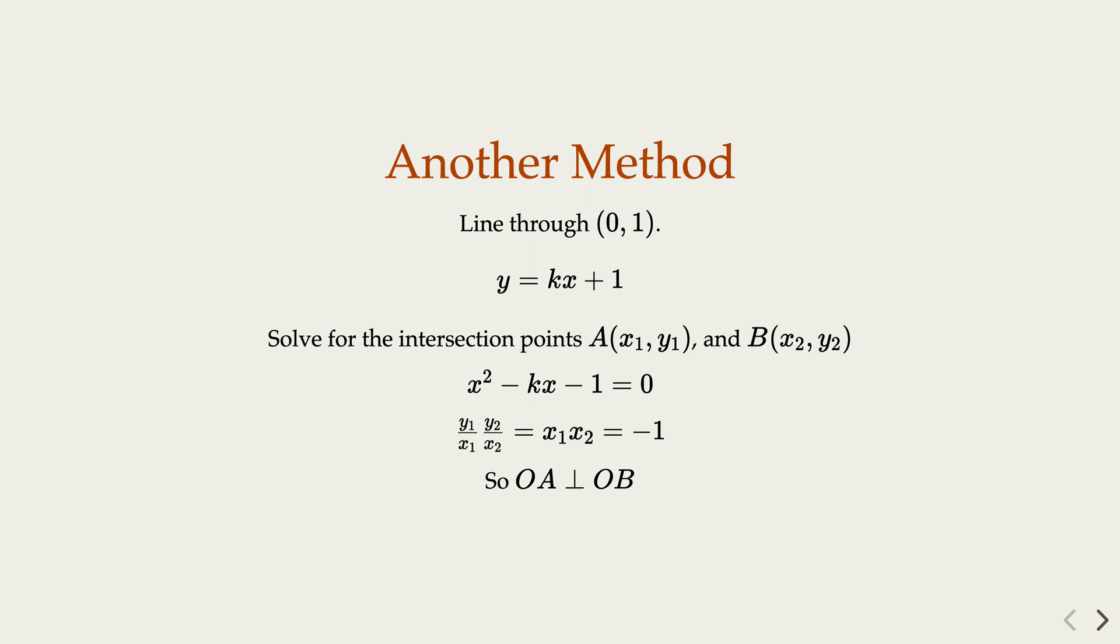And then you can go backwards and prove. So basically, in either way, we have shown that if the condition is true, then we can conclude the line segment AB has to go through the point (0,1).